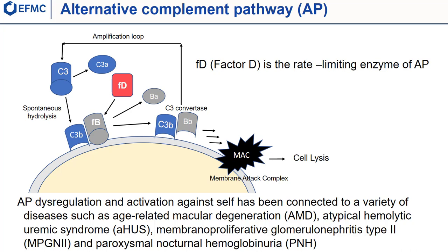The complement system is a major component of the innate immune system. Its activation is achieved by three different pathways: the classical, the lectin, and the alternative. The alternative pathway is constitutively active and depends on the spontaneous hydrolysis of the third component of the complement, called C3. This provides the first rapid response of the innate immune system by depositing C3b on the pathogen cell surface, which triggers the recruitment of the plasma protein factor B. Factor D, which is a serine protease, cleaves factor B only when it is in complex with C3b, to form C3Bb, known as the C3 convertase. C3 convertase, by cleaving more C3, triggers the amplification loop.